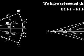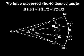Connect QD1 and QD2. Now connect OD1 and extend to E1 and F1. Also connect OD2 and extend to E2 and F2. We have trisected the 60 degree angle. B1, F1 is equal to F1, F2 is equal to F2, B2.